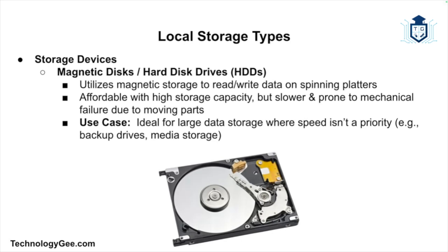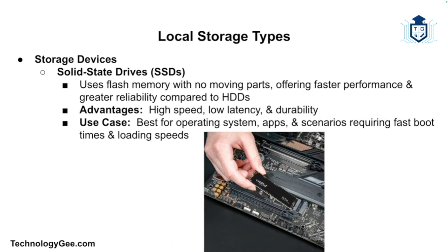The first storage device we'll cover is the hard disk drive. HDDs use magnetic storage to store and retrieve data on spinning disks called platters. They are relatively affordable and offer high storage capacity, but are slower compared to other storage options and prone to mechanical failure due to moving parts. The use case is large data storage needs where speed is not a primary concern, such as backup drives or storing media files.